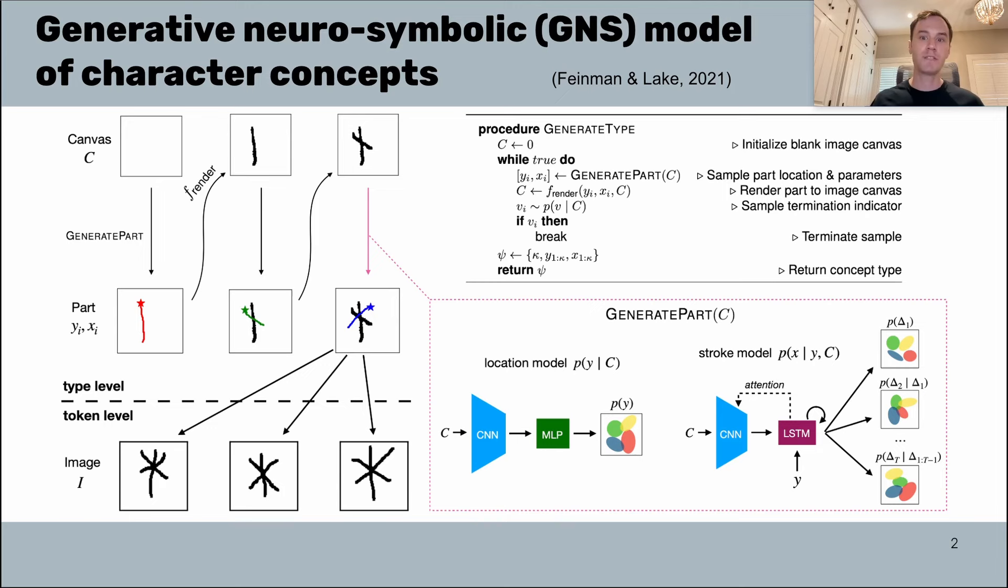At each time step we sample the next part given the current canvas with the procedure generate part, which is a neural network module that sequentially generates strokes while attending to the canvas.